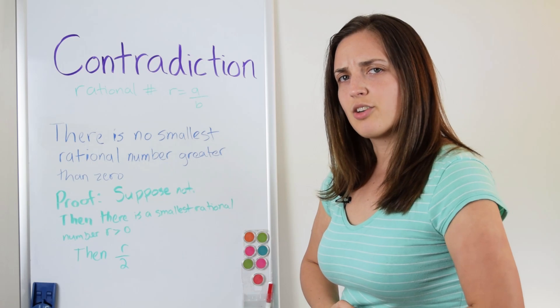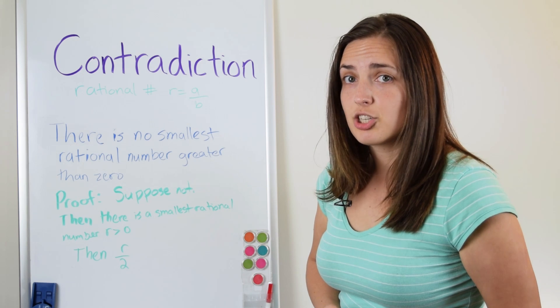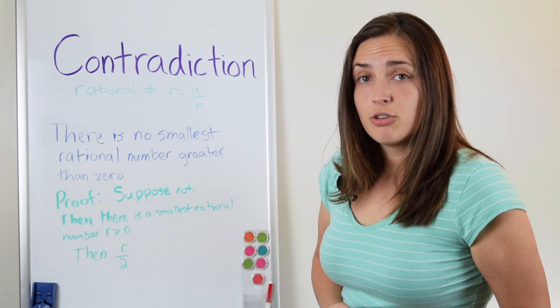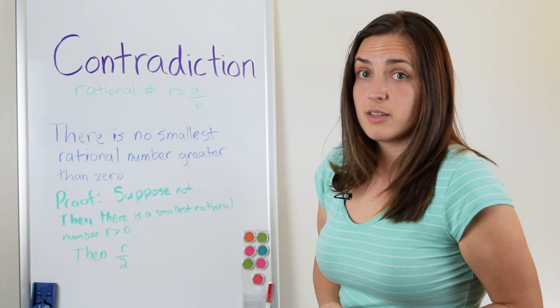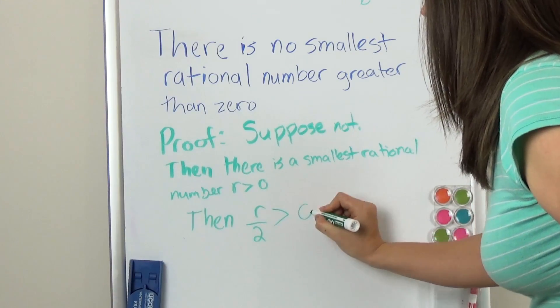Well, what is r divided by 2? If you have a rational number and you divide it by 2, it's still a fraction. So r divided by 2 is a perfectly good rational number. Is it still positive? Sure it is. r divided by 2 is still positive.